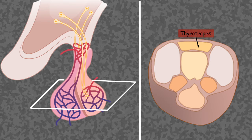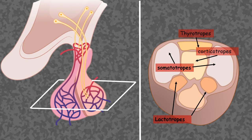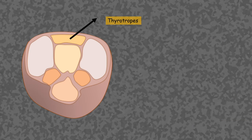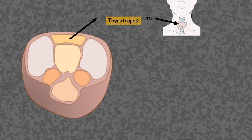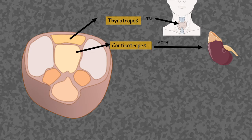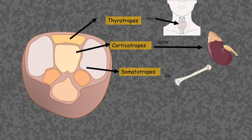Here we have the thyrotrope cells, which secrete thyrotropin or TSH. Thyrotropes secrete TSH, or thyroid stimulating hormone, which acts on the thyroid gland to secrete T3 and T4. Corticotropes secrete ACTH, or adrenocorticotropic hormone, which stimulates the adrenal cortex to secrete corticosteroids.